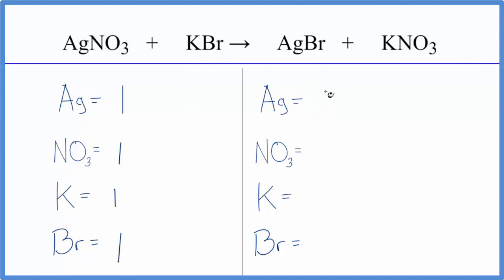On the product side, we have one of the silver atoms, one of the nitrate. And when we do these double displacement, it's often very helpful to count the polyatomic ions as just one item if you have them on both sides. We have one potassium and one bromine. And you'll notice right away that everything's the same on the products and the reactants.